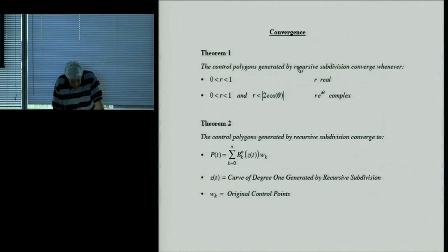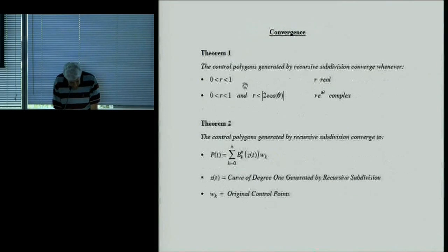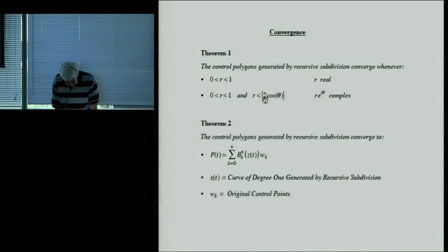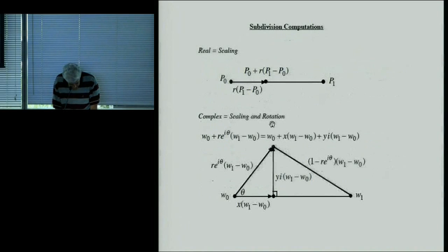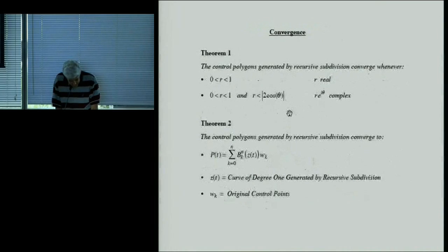Why do these converge? In the real case, the subdivision parameter R between 0 and 1 ensures each piece is a scaled-down version of the whole. For a complex parameter R·e^(iθ), you need the scaling R to be between 0 and 1, and an additional constraint that ensures both resulting line segments are smaller than the original. That makes the transformations contractive, which guarantees convergence.